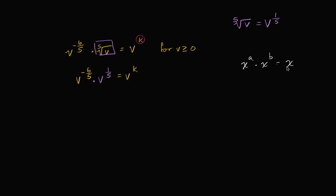So here, I have the same base v. So this is going to be v to the, and I can just add the exponents, v to the negative six-fifths power plus one-fifth power, or v to the negative six-fifths plus one-fifth power.